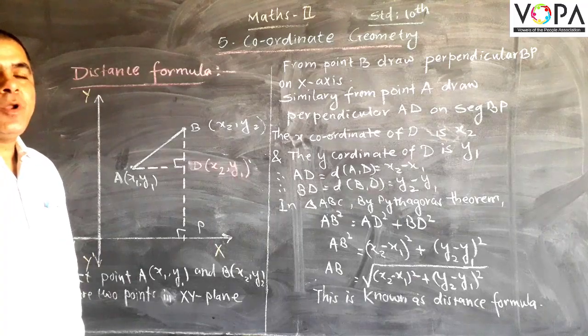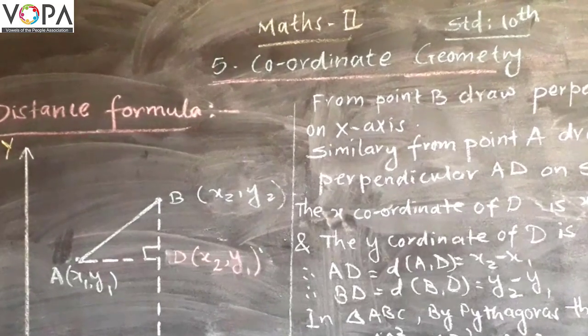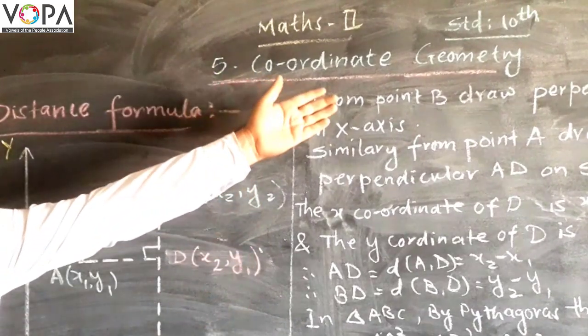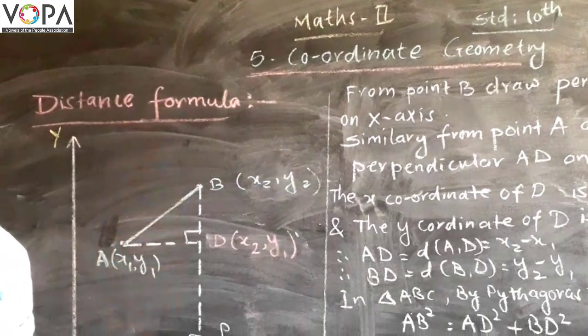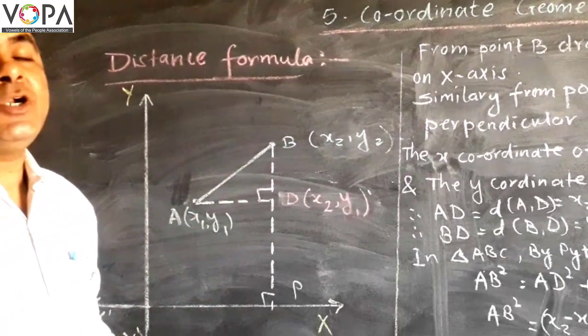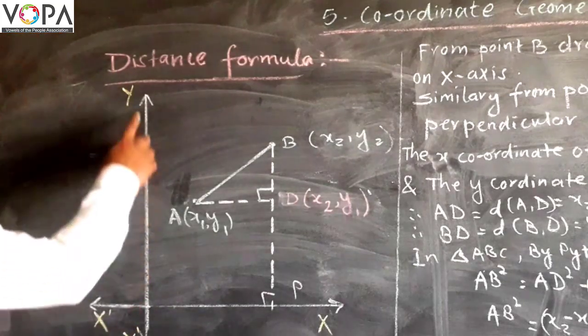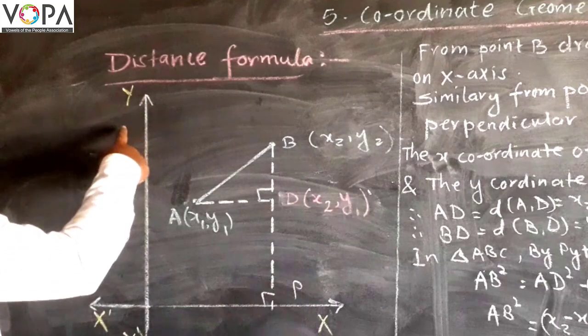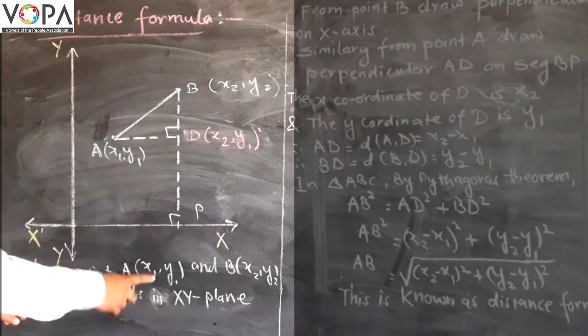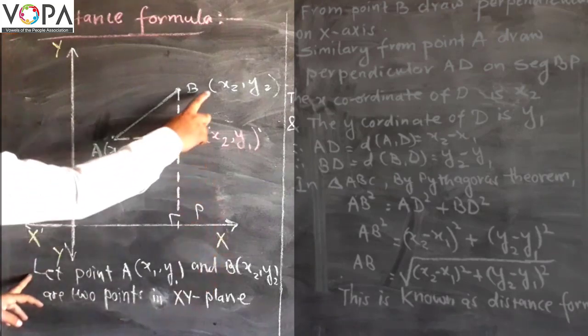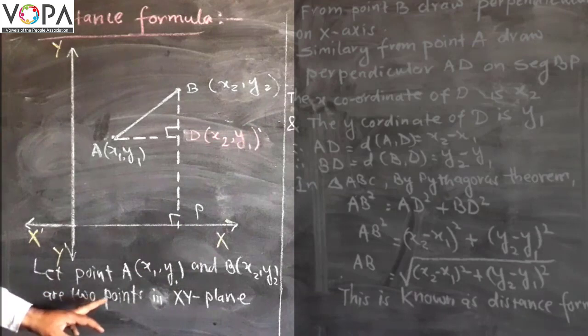Hi dear students, now we are going to study the first point from this chapter, that is coordinate geometry. The first point is distance formula to find the distance between two points in the XY plane. Let us consider this is the XY plane and mark the point A having coordinates (x1, y1) and B (x2, y2), two points in the XY plane.